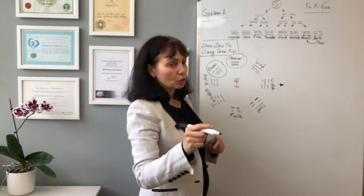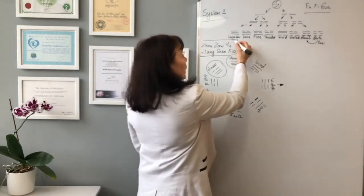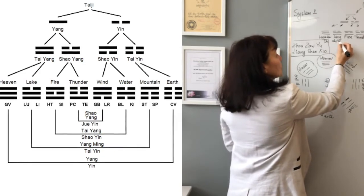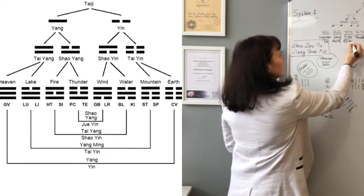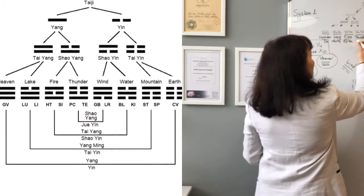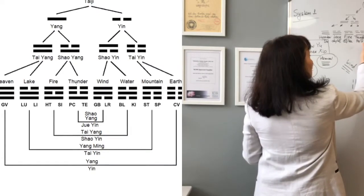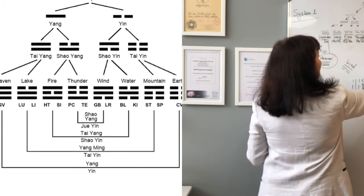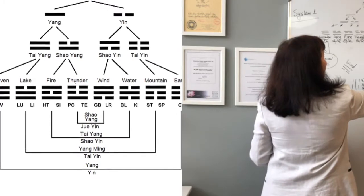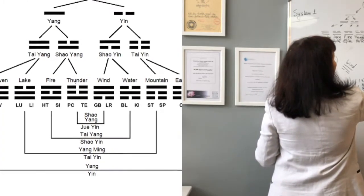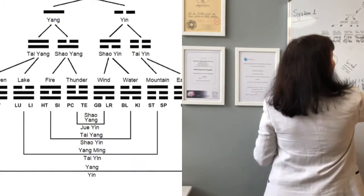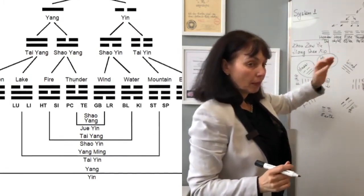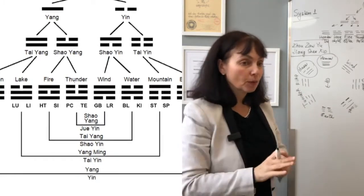And now let's remember the distribution of the meridians. Heaven is Duwei. Lake is lung, large intestine. Fire is small intestine heart. Thunder is pericardium san jiao. Wind is liver, gallbladder. Water is kidney and bladder. Mountain is stomach and spleen. So this is what the distribution was in the pre-heaven Bagua or first Fusigua.